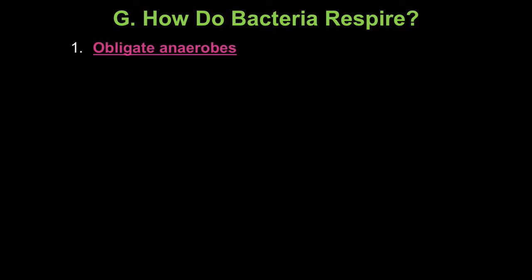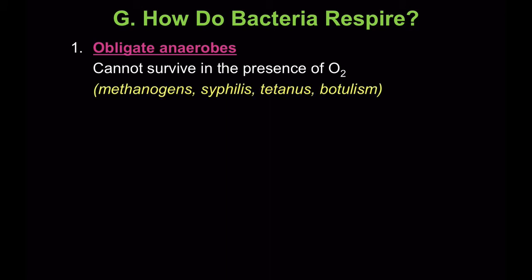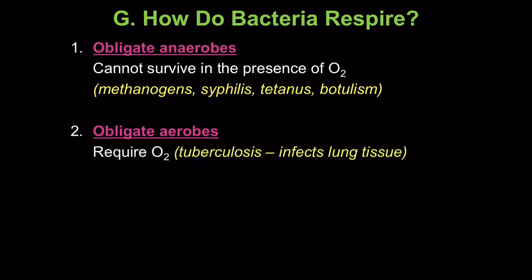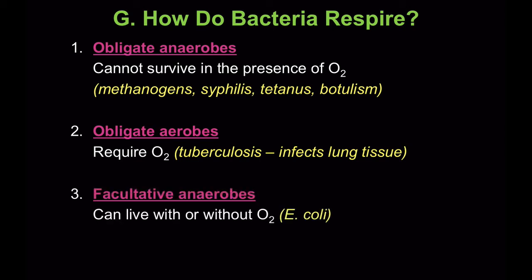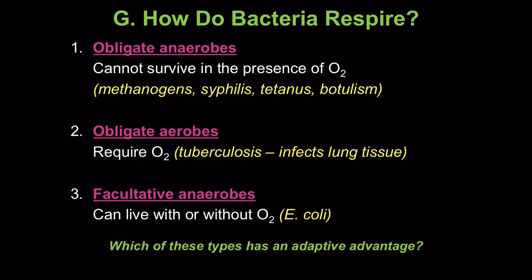So how do bacteria respire? Some don't — there are obligate anaerobes that cannot survive in the presence of oxygen, like methanogens, syphilis, tetanus, and botulism. Others are obligate aerobes, which require oxygen, like the bacteria that cause tuberculosis, which infects the lung tissue. Facultative anaerobes can live with or without oxygen, like E. coli. Facultative anaerobes have an adaptive advantage because they're the most flexible.